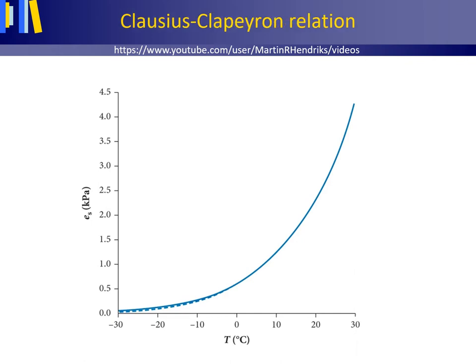This picture shows a graph of the Clausius-Clapeyron relation for water. The relation is named after German physicist and mathematician Rudolf Clausius and French engineer and physicist Benoit Clapeyron. On the vertical axis we have the saturation vapor pressure and on the horizontal axis we have temperature, here in degrees Celsius.